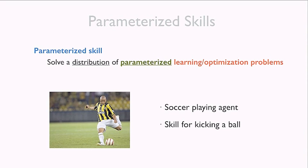Let me give you an example. Suppose we have a soccer-playing agent that wants to learn a skill for kicking a soccer ball. During a game you may need to execute lots of different kicks with different forces and toward different places on the field. Learning even a single type of kick — with one specific force toward one place — is already a pretty challenging learning problem, as we see when humans practice kicks for the first time.